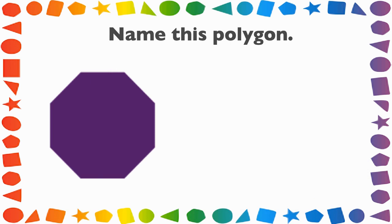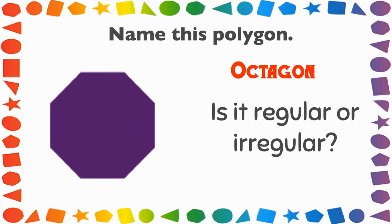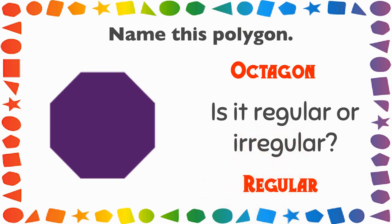Let's take a look at this one. Name this polygon. Count the sides. If you said octagon, you are correct. Now is it regular or irregular? This is a regular polygon.